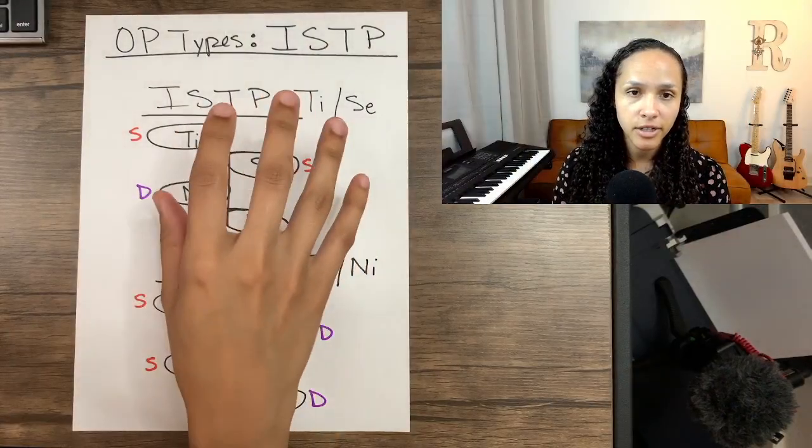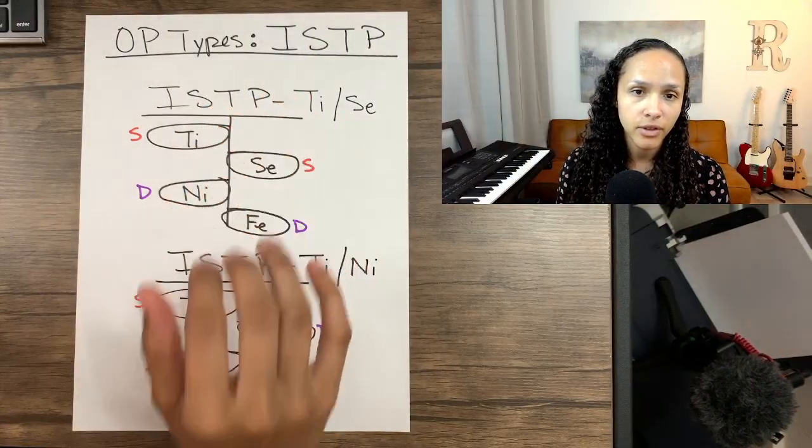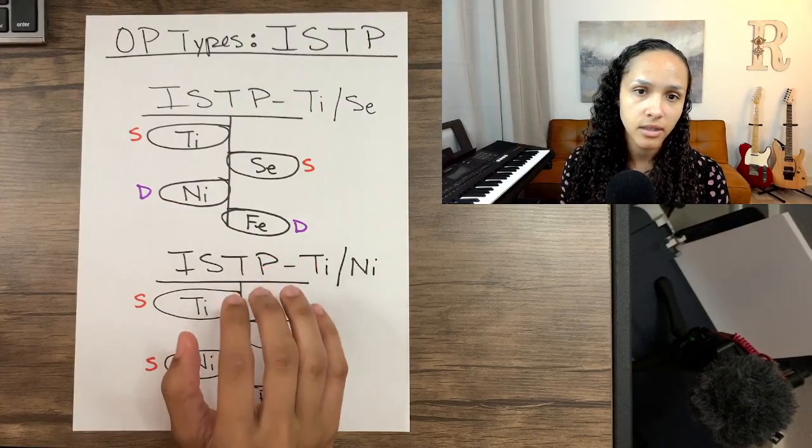Hey guys, it's Rachel Castile and welcome to Typology Corner. Today I'm doing an overview video on the ISTP personality type from the perspective of Objective Personality. I'm going to cover the standard type and the jumper type, and just to briefly show you what that looks like — here's our standard type with their functions, and the jumper type.